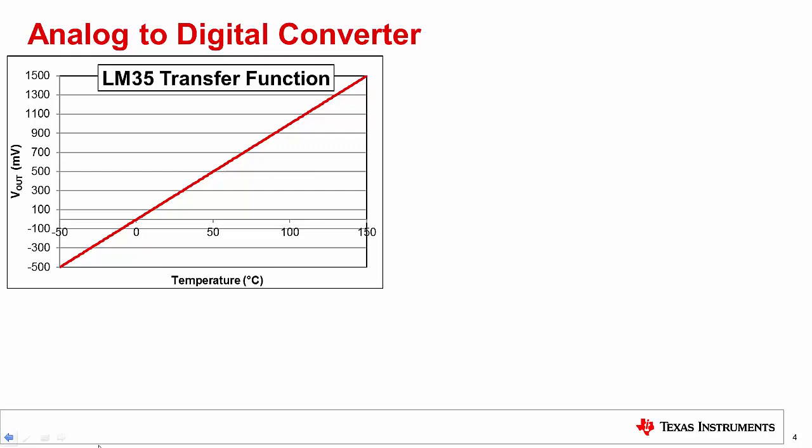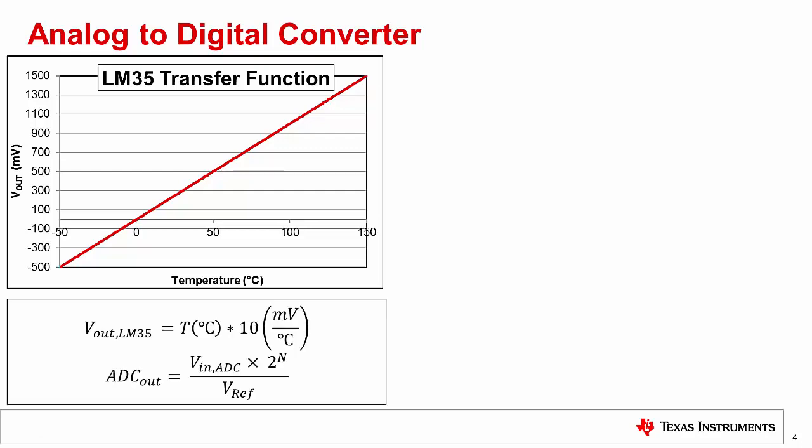Now the default reference voltage for the ADC on the Arduino Uno is 5 volts. And in the context of an ADC, the reference voltage is the value that the input voltage will be compared to. The output of an ADC expresses the input voltage as a fraction of this reference voltage.